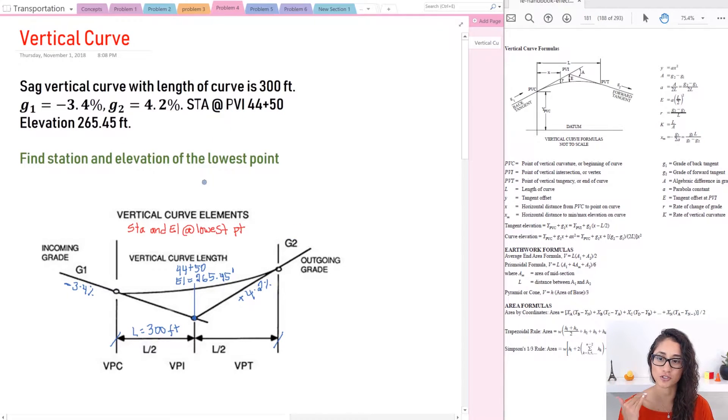Okay guys, so we're given a sag vertical curve with G1 of minus 3.4% and G2 of 4.2%, so make sure you keep the negative. The length from PVC to PVT is 300 feet and we need to calculate the station and the elevation at the lowest point. Note that the station and elevation at the lowest point is not at PVI. It's going to be somewhere else. Also keep in mind that we have a sag vertical curve and that's why we have a lowest point.